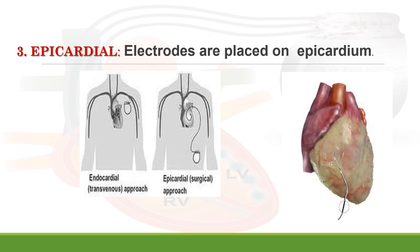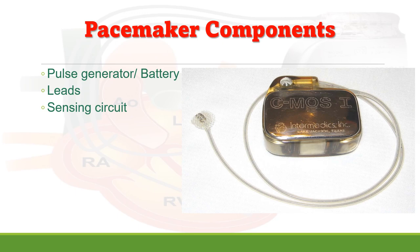The pacemaker has mainly three components. First is the pulse generator, or battery, which usually has five to ten years of life — after which the battery must be replaced. Second is the leads, which are connected from the generator and carry the impulses. Third is the sensing circuit, which senses the generator impulses and transmits them to the myocardium.